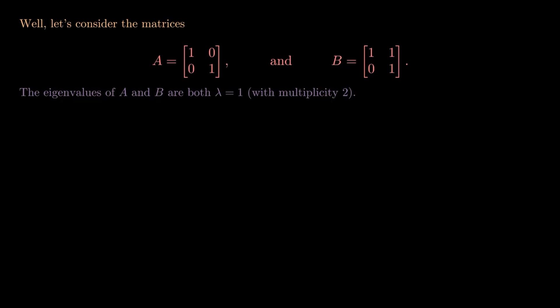You can convince yourself that the eigenvalues of A and B are both equal to one and they occur with a multiplicity of two. So one occurs twice, and what we need to do now is check if there's an invertible matrix T such that B equals T inverse A T.